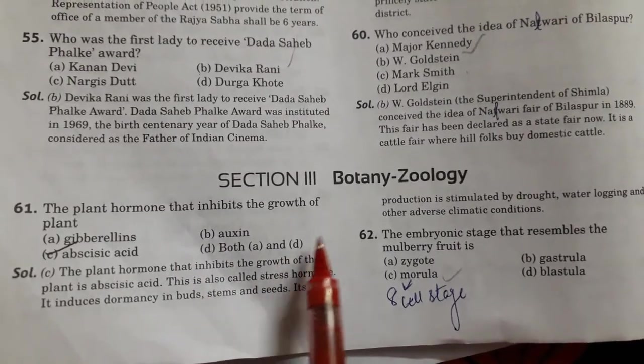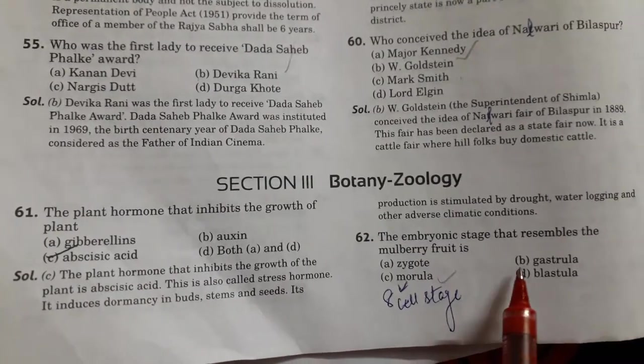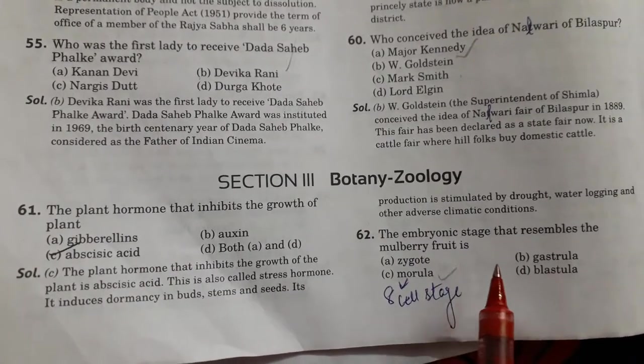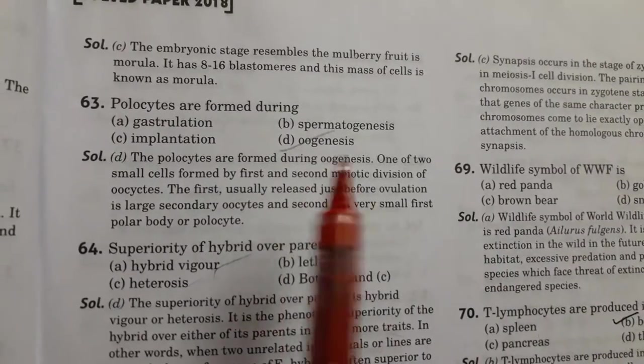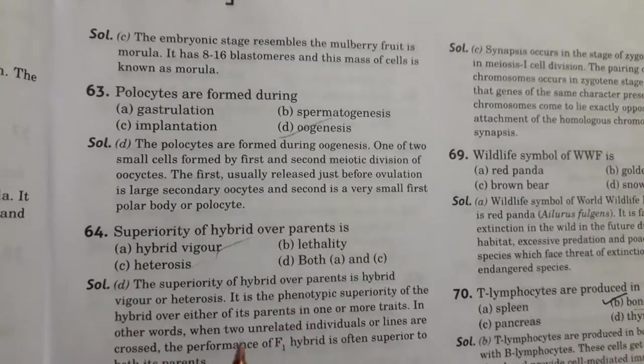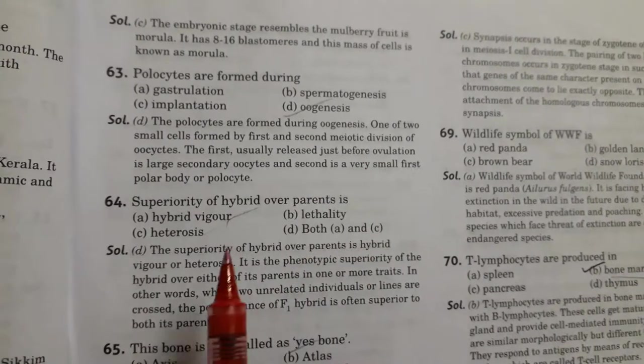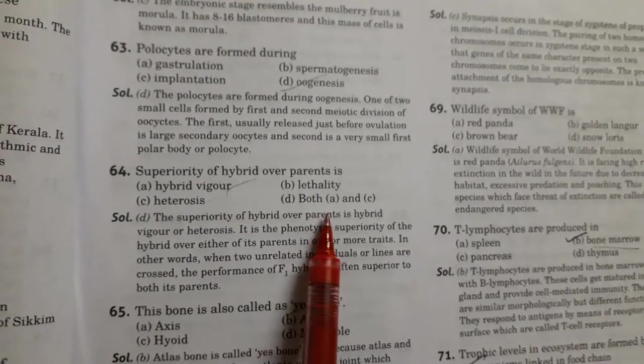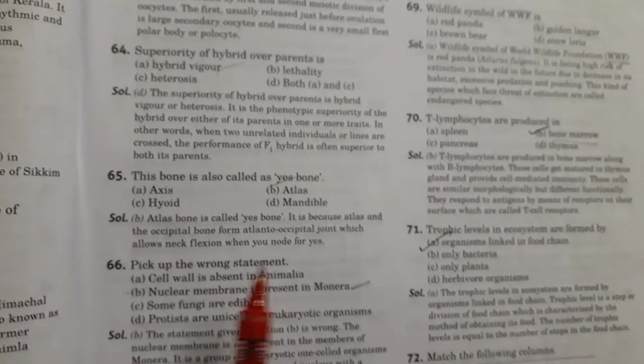The first question is the plant hormone that inhibits the growth of the plant. This is abscisic acid. Then the embryonic stage that resembles the mulberry fruit. This is morula. Next is polycytes are formed during oogenesis. Next is superiority of hybrid over parents, so this is hybrid vigor and heterosis. Option D is right. Then the bone is also called yes bone. So atlas bone is called yes bone.